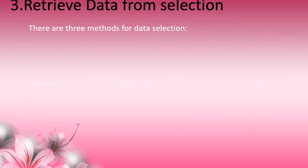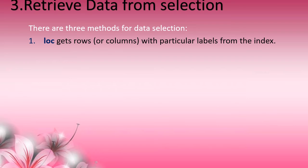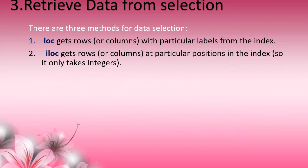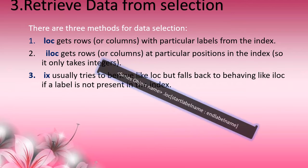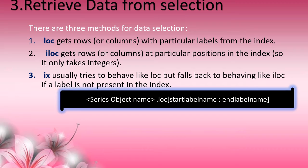Three more methods are used for retrieving data from a Series object. The LOC method retrieves rows or columns with a particular label from the index — through labels, we can access a set of elements. ILOC retrieves through position using integer values. IX works like both LOC and ILOC: if there is no custom index, it works like LOC; otherwise, it works like ILOC. The general format for LOC is: series_object.loc[start_label:end_label].